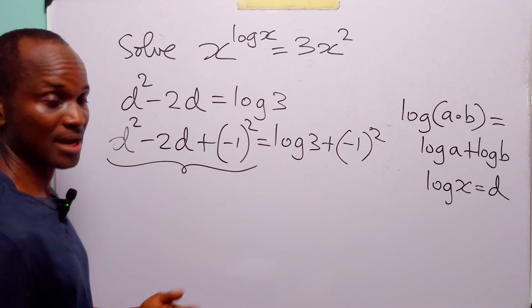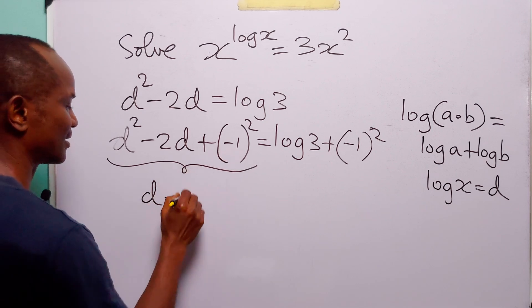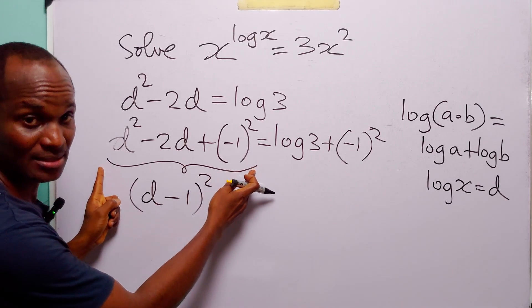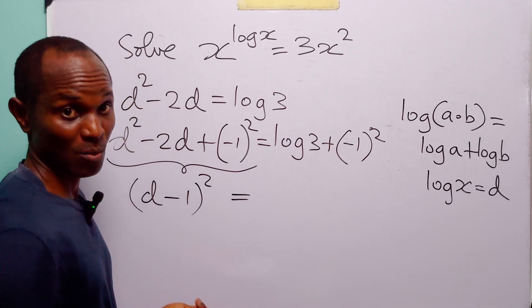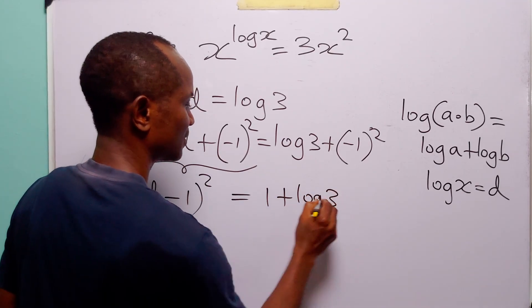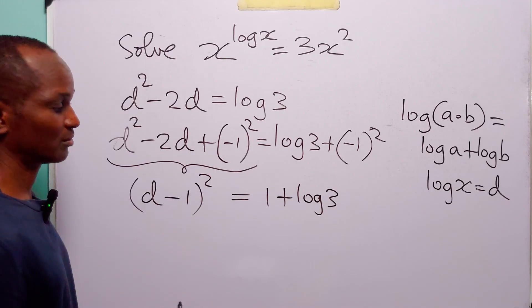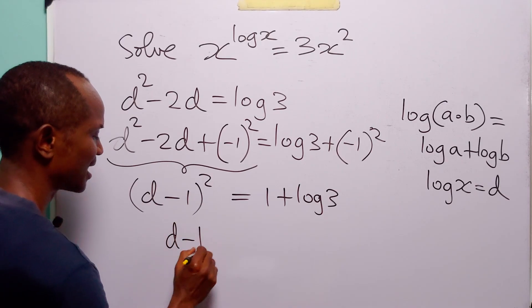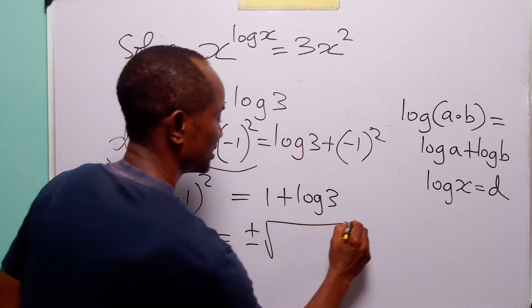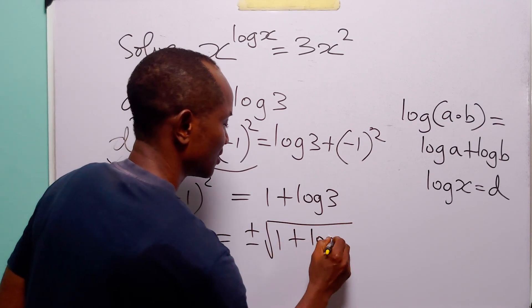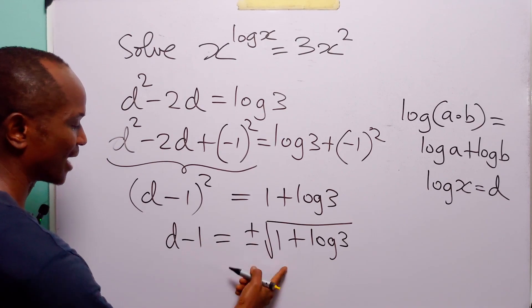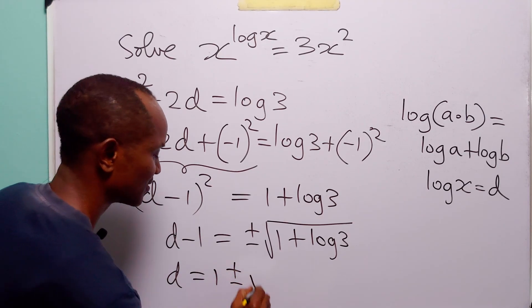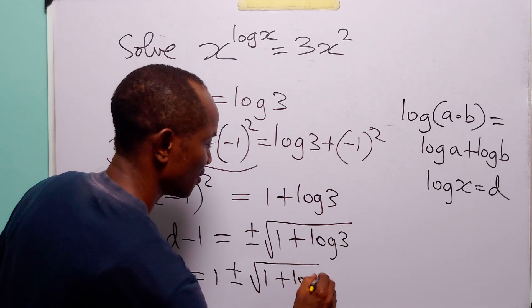The left hand side is a perfect square: (d - 1)². On the right hand side, (-1)² = 1, so we have 1 + log 3. Taking the square root of both sides gives d - 1 = ±√(1 + log 3), and adding 1 to both sides gives d = 1 ± √(1 + log 3).